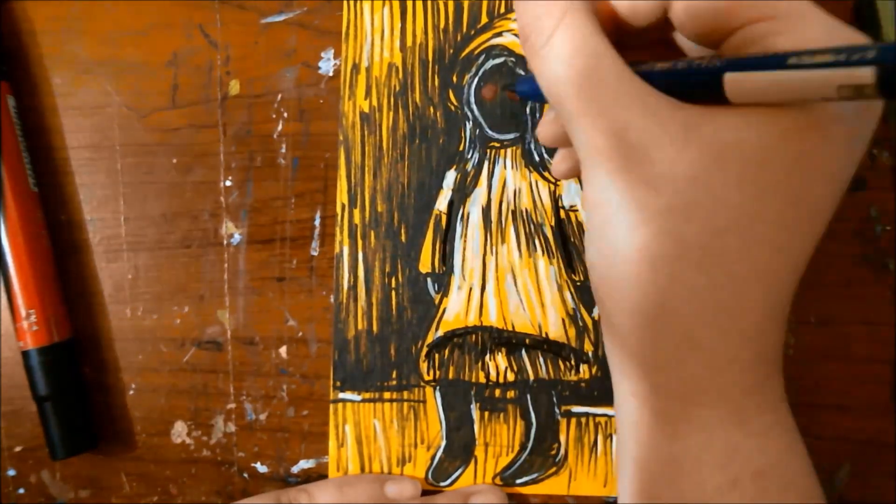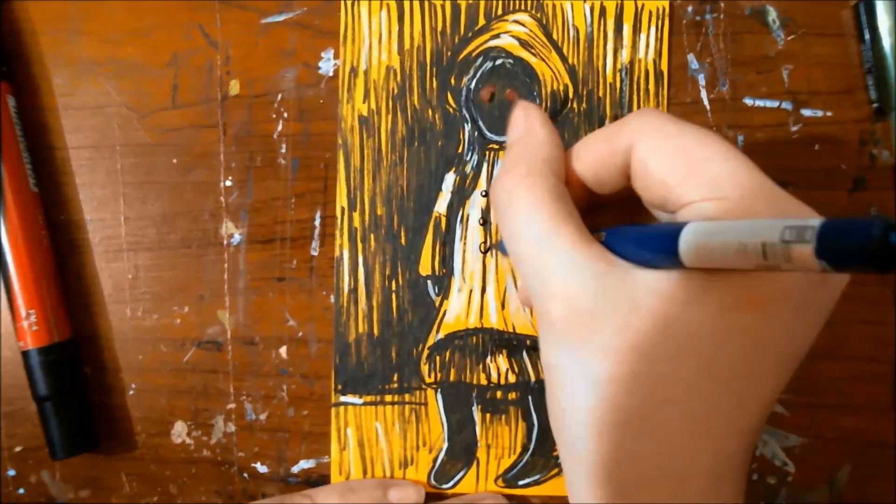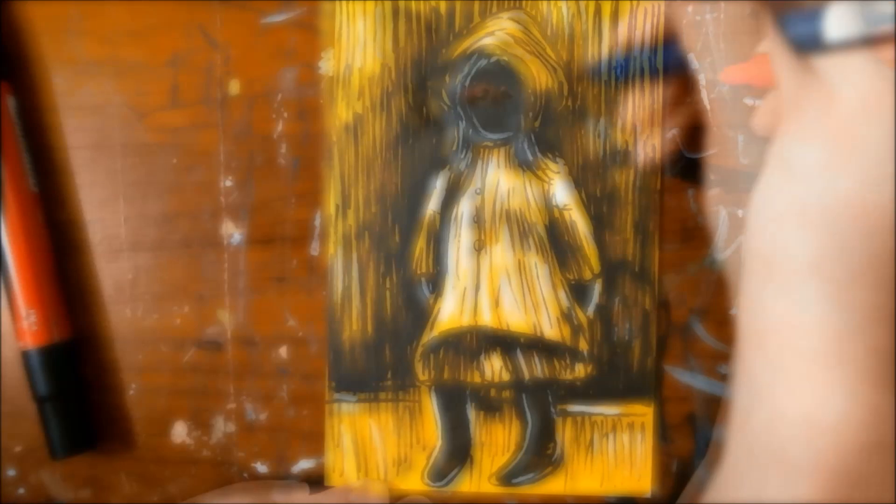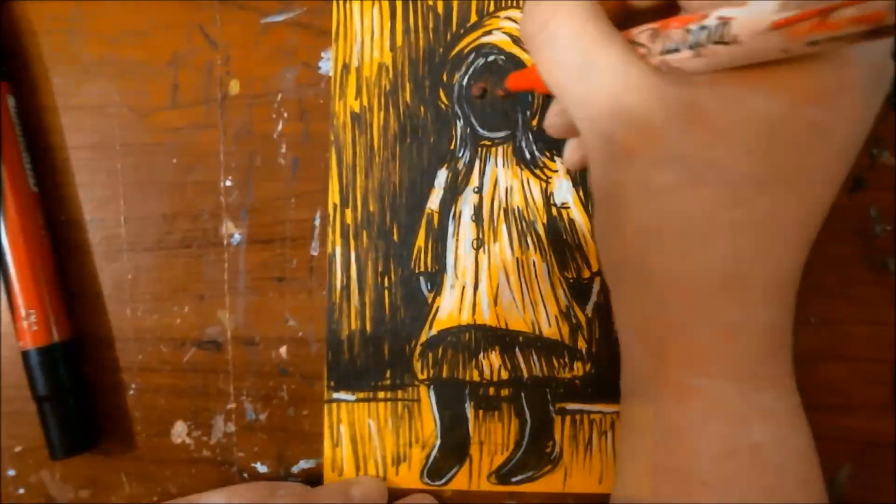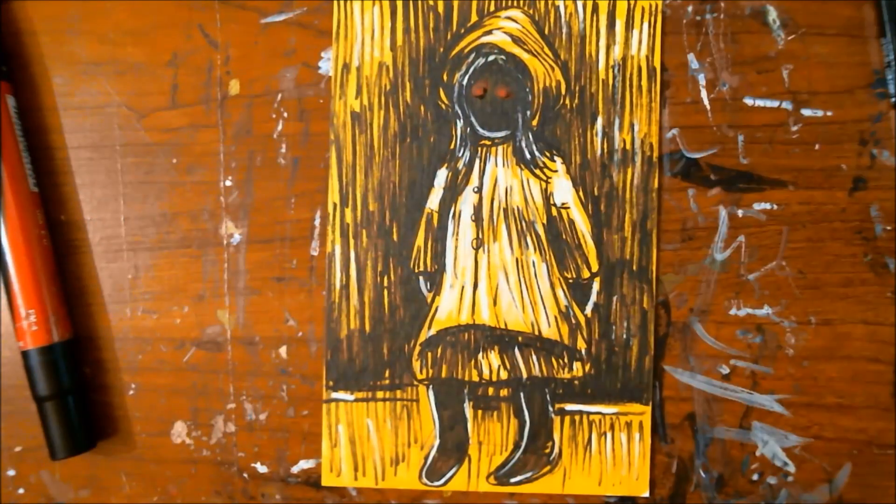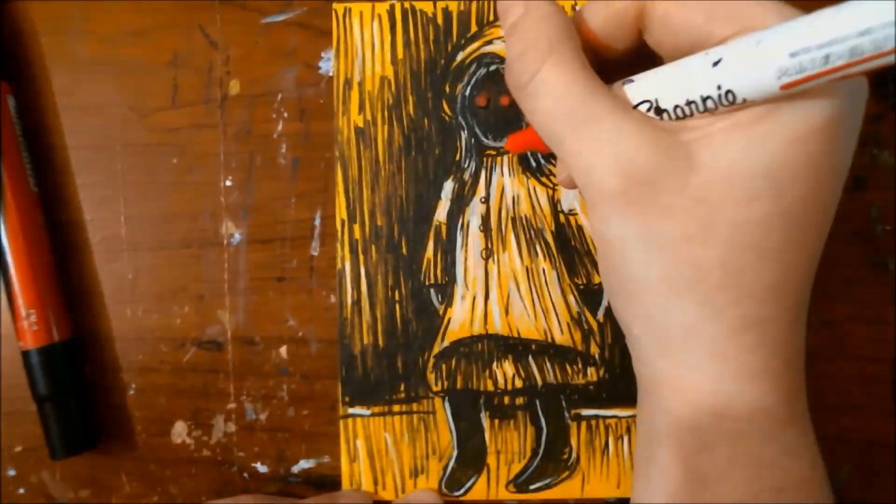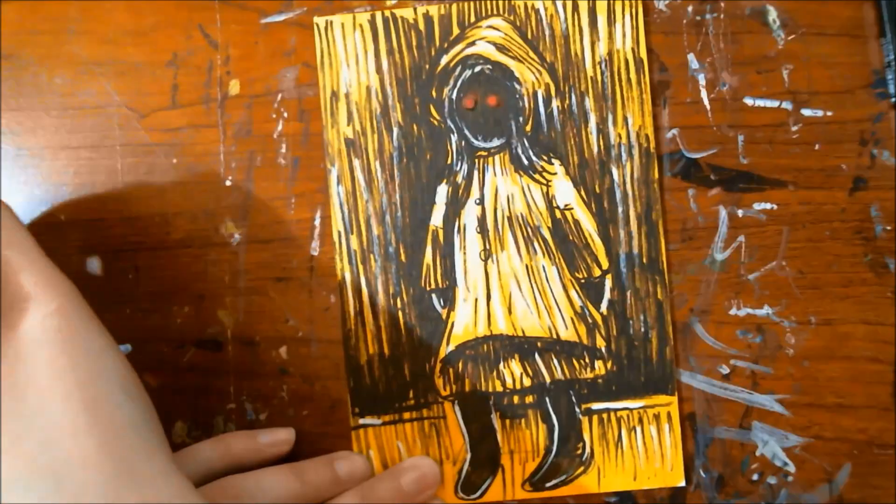And I bring back that black Kuretake marker to do more lines. Got a lot of messy lines going on in this here drawing. I do pull in a red Sharpie paint marker. I keep pulling in the wrong one. One of them doesn't work quite as well and I always forget which one it is so I bring in the other one that is a bit brighter.